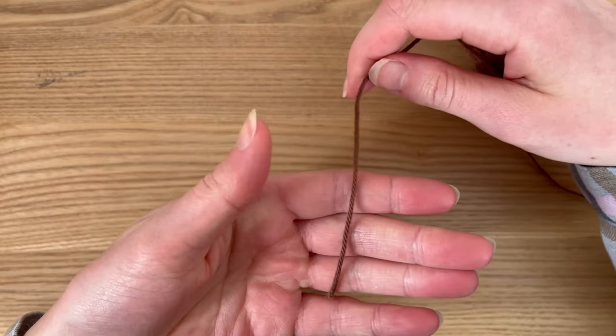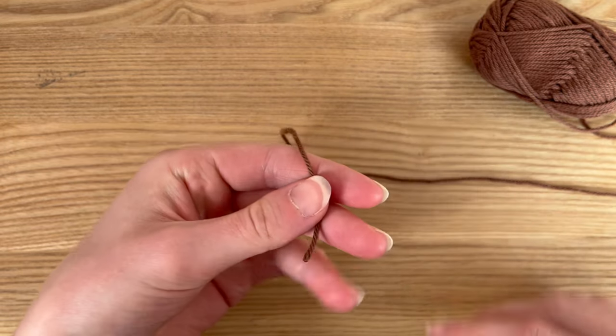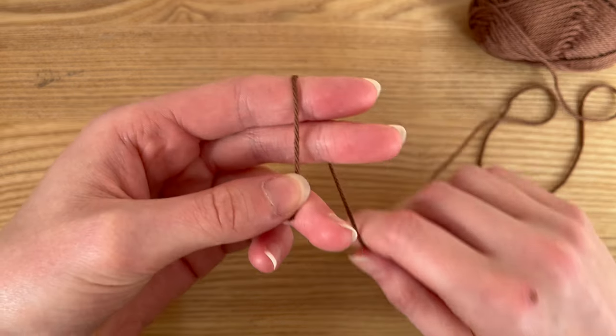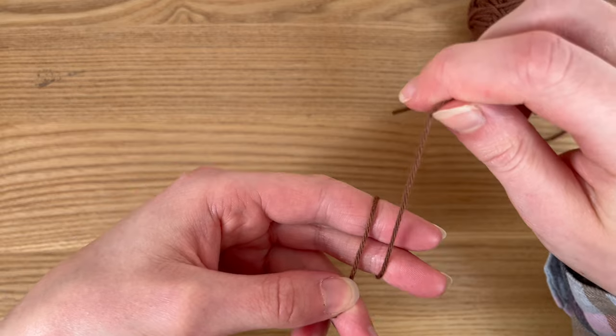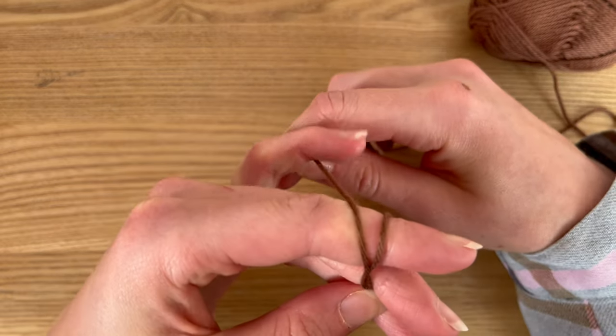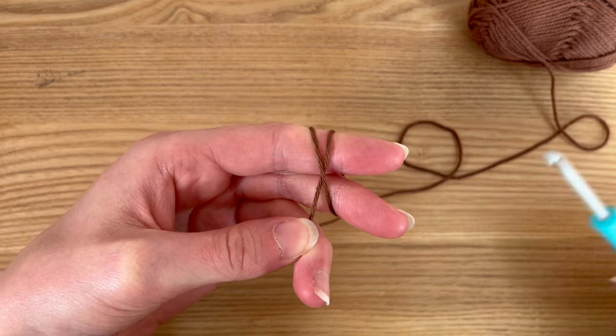Hold the end out in front of you and pinch it with your thumb between your first and second finger. Loop it around your hand and cross it over and hold it down with your pinky so it doesn't move.